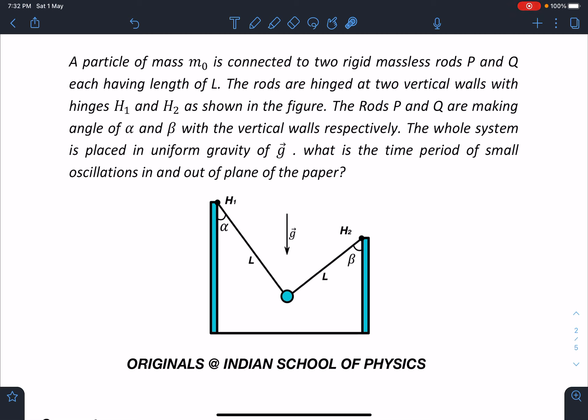The whole system is placed in uniform gravity of g. What is the time period of small oscillation in and out of plane of the paper?